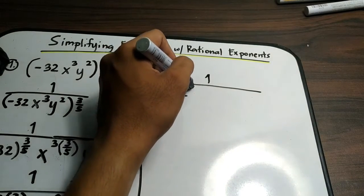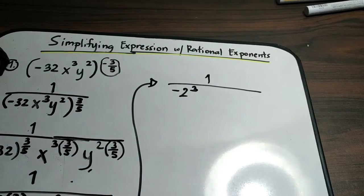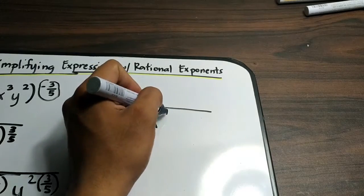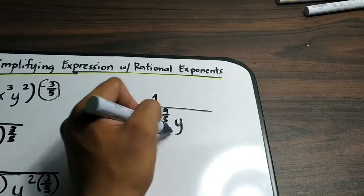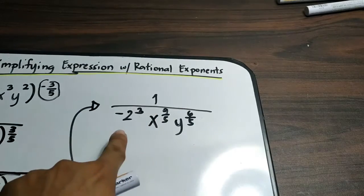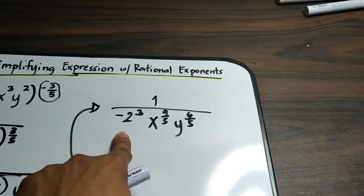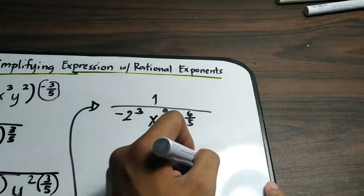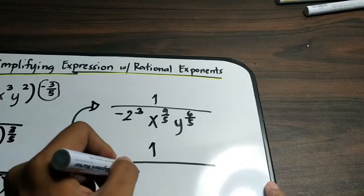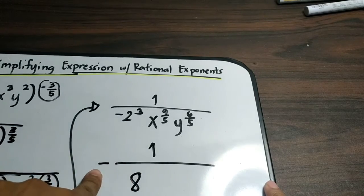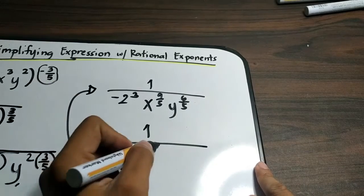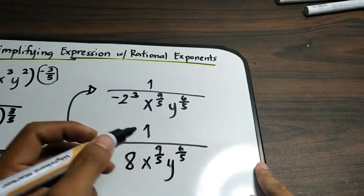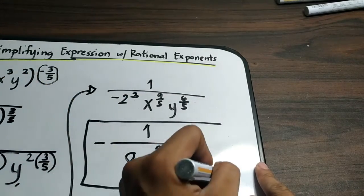We have x raised to 9 over 5 and y raised to 6 over 5. We can still simplify: negative 2 raised to 3 is equivalent to negative 8. So the final answer is negative 8 times x raised to 9 over 5 times y raised to 6 over 5. That is the answer for example number 1.